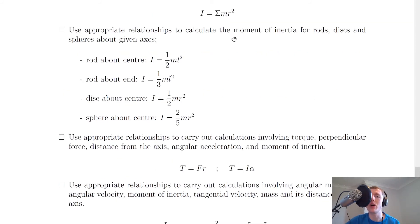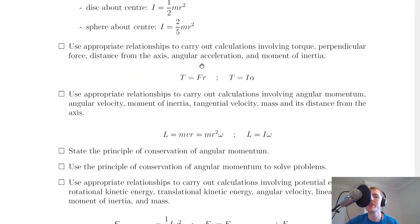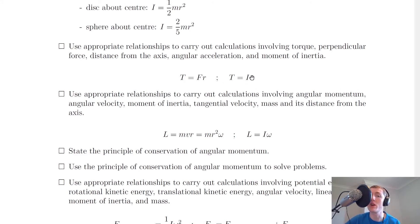Use appropriate relationships to calculate the moment of inertia for rods, discs and spheres about given axes — remember you get these equations on the relationship sheet in the exam. For a rod about the centre: i equals a half ml squared; for a rod about the end: i equals a third ml squared; for a disc about the centre: i equals a half mr squared; and for a sphere about the centre: i equals two fifths mr squared. For torque calculations, use T equals Fr to find torque in terms of force and distance from the axis of rotation, and T equals i alpha relating torque to angular acceleration.